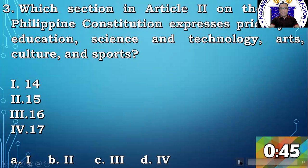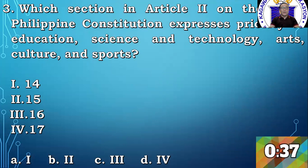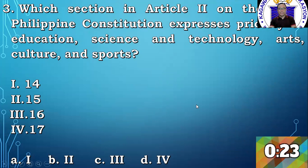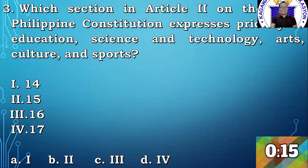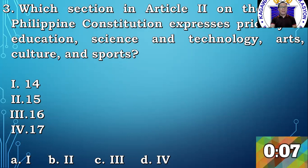Question number 3. Which section in Article 2 of the 1987 Philippine Constitution expresses priority to education, science and technology, arts, culture, and sports? 1. Section 14, 2. Section 15, 3. Section 16, 4. Section 17. A1, B2, C3, D17. A lot of time to answer, really. It's an easy question, actually.